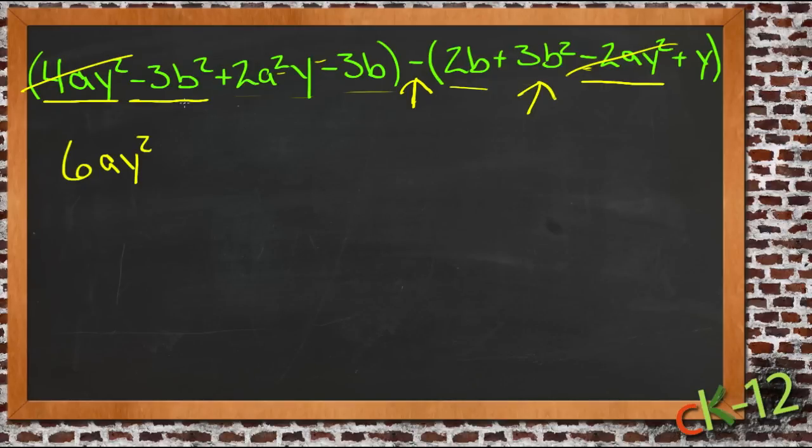So now we're taking negative 3b squared minus positive 3b squared. So we already owe three of them, and we're going to take away three more. So now we're going to owe six of them, minus 6b squared.